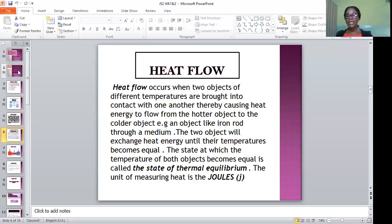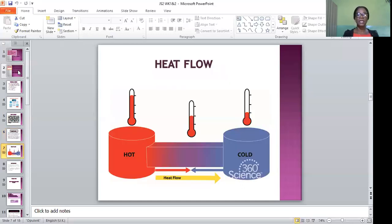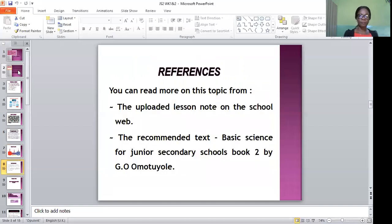The unit of measuring heat is in joules. This is a graphical representation of how heat is flowed from a region of hot objects to a region of cooler objects. And at a point in time, the temperature of the two objects becomes equal. With this, we have come to the end of today's learning. There is a comprehensive note on the school website. Please endeavor to download it, copy the note and do the assignments that follow. You can also read the recommended text for more explanation on this topic using Basic Science for Junior Secondary School Book 2 by G.O. Omotsuyole. Thank you and stay blessed.